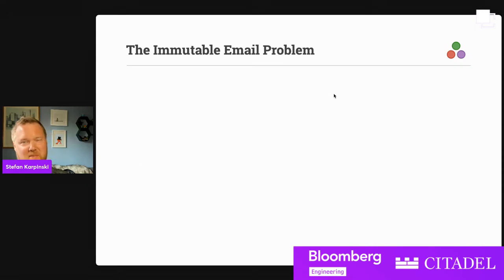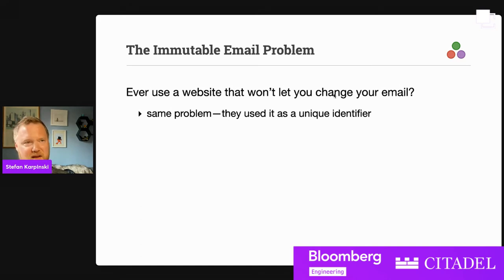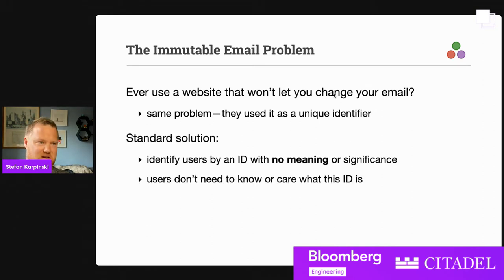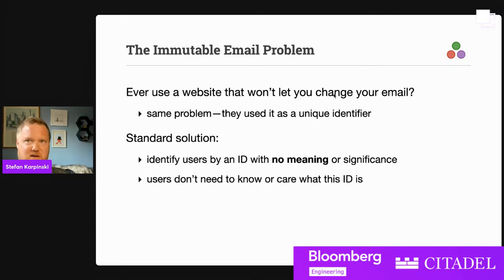This reminded me of something from developing web applications: if you've ever used a website that won't let you change your email, it's the same problem. Someone decided that email was a good unique identifier and decided to identify users by their email. Then you can't change the email because it's supposed to be this permanent unique identifier. The standard solution is to identify users by some internal ID that has no particular meaning or significance. Users don't even need to know what the ID is, and then you can change their email as much as you want. This meaningless internal ID gives us freedom.